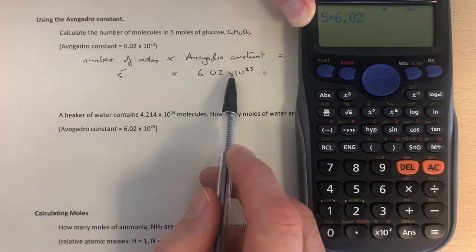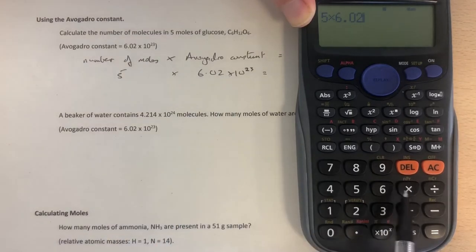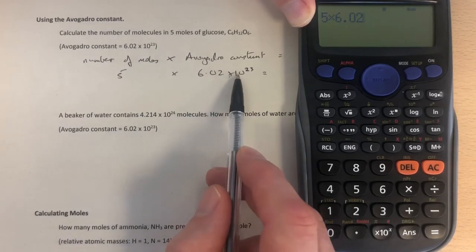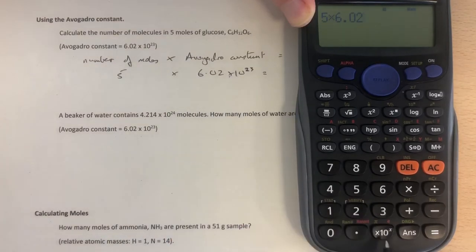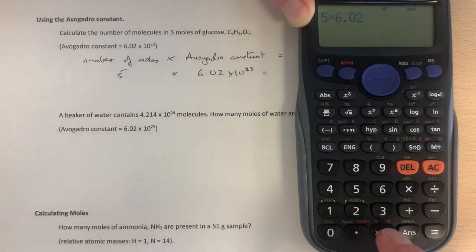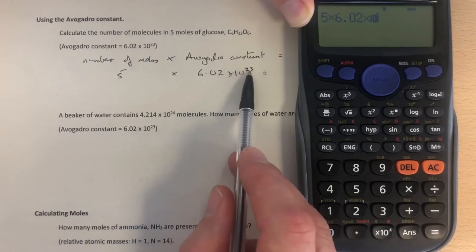Now, this times here, the mistake people make is they press multiply again. Do not press multiply. Times 10 to the 23. You need to find the button on your calculator that works. In this case, it's this one. Don't press any other button. Press that one. It may be called something else on your calculator. Different calculators call it something different. It's often down the bottom, though. So look carefully. Ask your teacher if you're not sure. Press that button. Times 10. So that's now times 10. We now need to put 23 in.